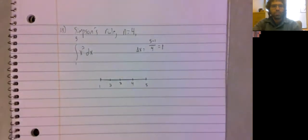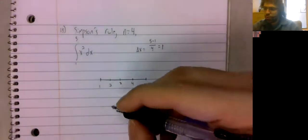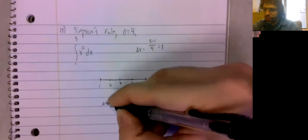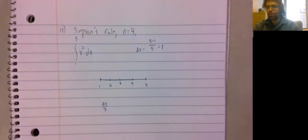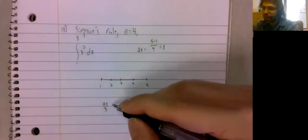And Simpson's rule, delta x over three. Remember, delta x over two is trapezoidal.